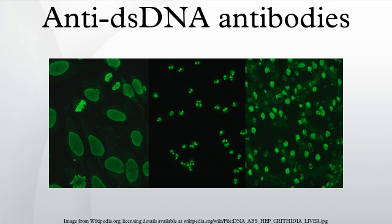Anti-dsDNA antibodies can also be produced through infection via a mechanism known as molecular mimicry. Upon exposure to pneumococcal polysaccharides, cross-reactive antibodies between dsDNA and pneumococcal polysaccharides are produced in lupus. Epstein-Barr virus is also known to induce dsDNA antibodies, as seen after immunization of animals with EBNA-1 epitopes. Anti-dsDNA antibodies might also be created secondary to the production of antibodies to other proteins within the nucleosome.